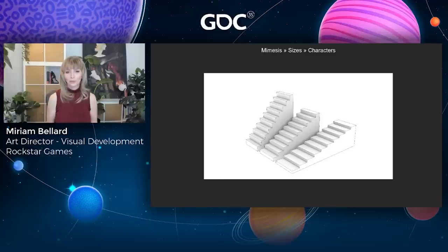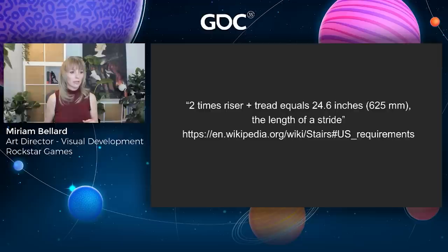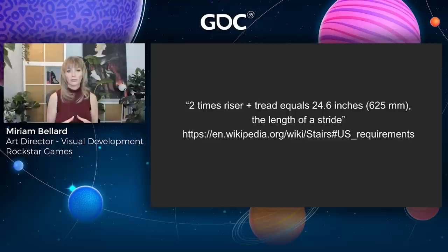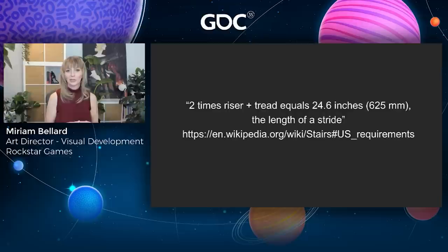As a public service announcement: the size of stairs is in proportion to a human stride. As the rise gets higher, the run gets shorter, because it's the rise and run together that are in proportion to a human stride. There are equations for this online. Interestingly, you could replace the human stride length with the stride length of a dwarf, a giant, or another non-human race, and actually make stairs correctly proportioned for non-human races in sci-fi and fantasy games.